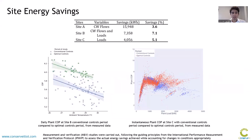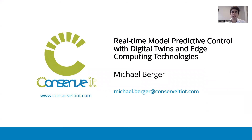Finally, energy savings were computed using measurement and verification studies following guiding principles from the International Performance Measurement and Verification Protocol (IPMVP), which gives guidelines on how to properly account for changes in conditions. Good savings of 3.6% to 7.1% were found depending on the site — quite significant considering no mechanical equipment was changed, only control strategies. The plant COP, a measure of efficiency, was shown to increase with optimal controls for sites B and C. Thank you very much for your time. This was real-time model predictive control with digital twins and edge computing technologies by Conservit.